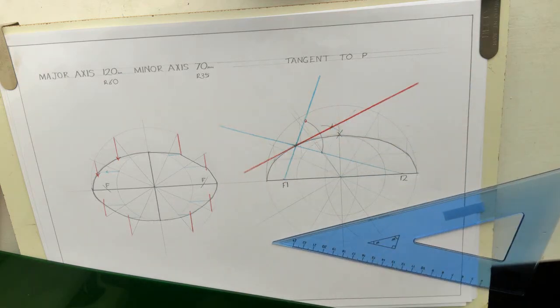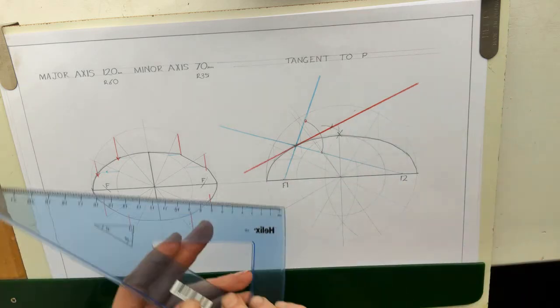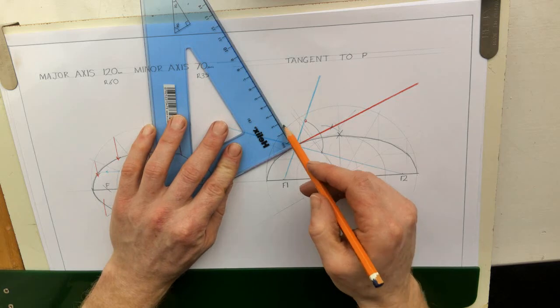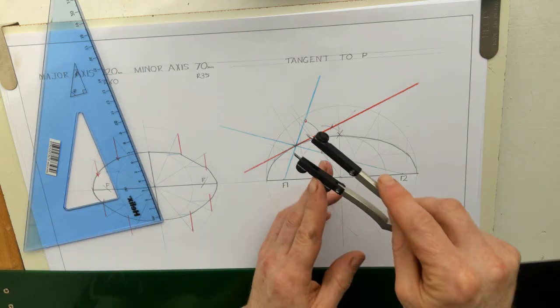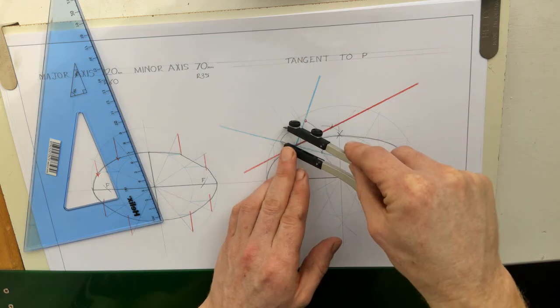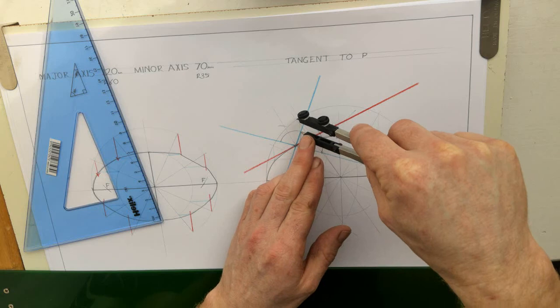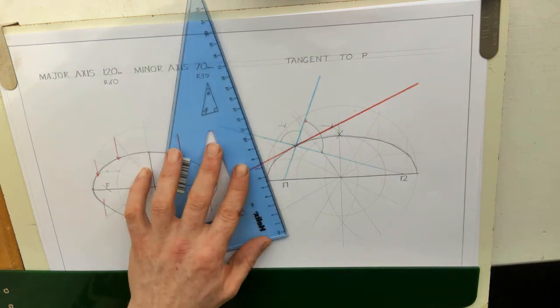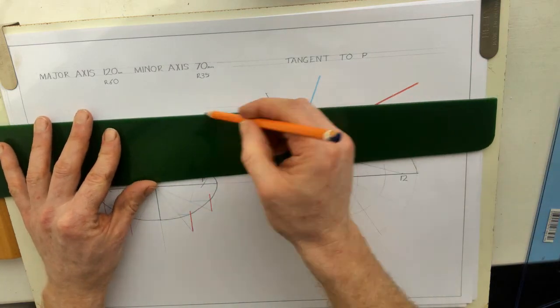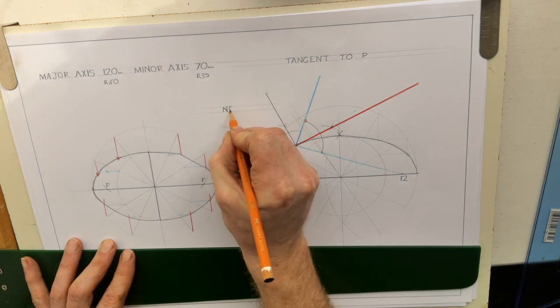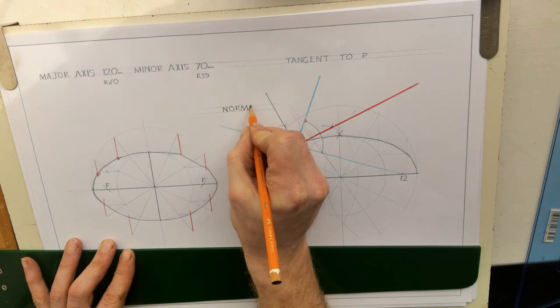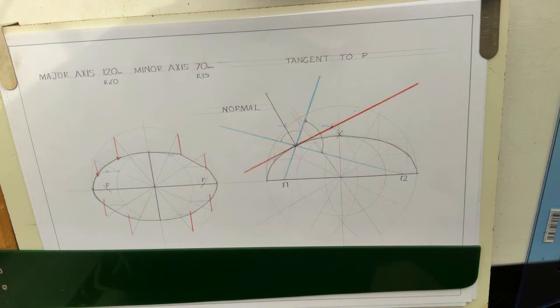If you wanted to get a thing called a normal, a normal would be at 90 degrees to this. So you could just go up at 90 degrees to this if you wanted to. Or you could bisect. I could bisect the other angle. Bisect the other angle would be the same thing. Set it to anything. Swing an arc. Swing an arc. Swing an arc.